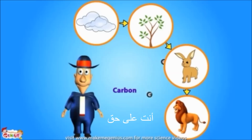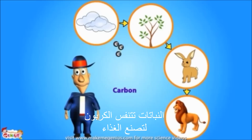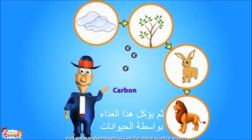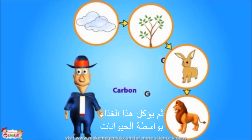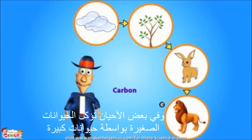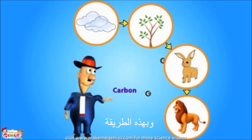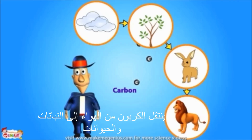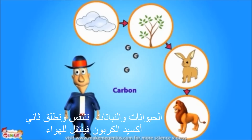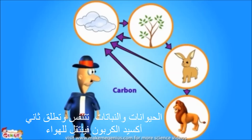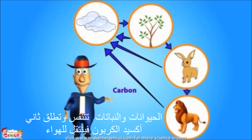You were right. Plants breathe in carbon dioxide to make food. Then this food is eaten by animals. Sometimes smaller animals are eaten by bigger animals. This way, carbon is transferred from air to plants and animals. Animals and plants breathe out carbon dioxide, and then it goes back into the air.